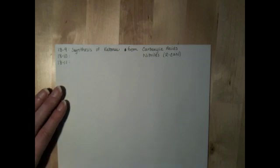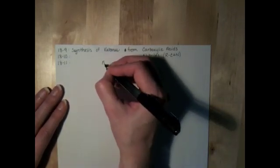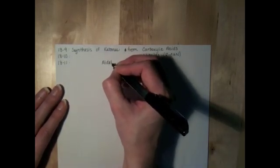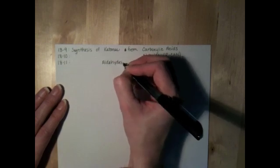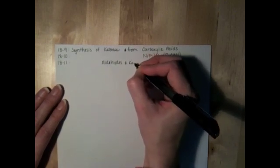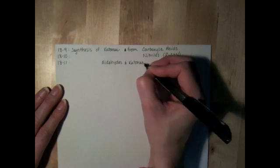And then section 18.11 is the synthesis of aldehydes and ketones, and these are going to be from acid chlorides.